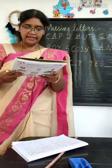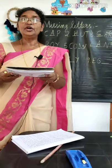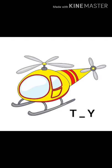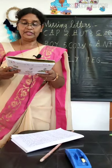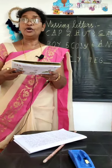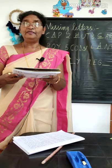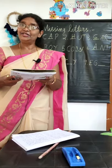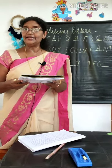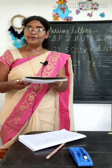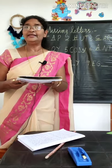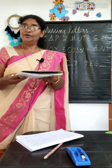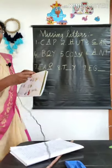Eighth one is TOY. T, dash, Y — which is the missing letter? O. Toy missing letter is O. Write O.